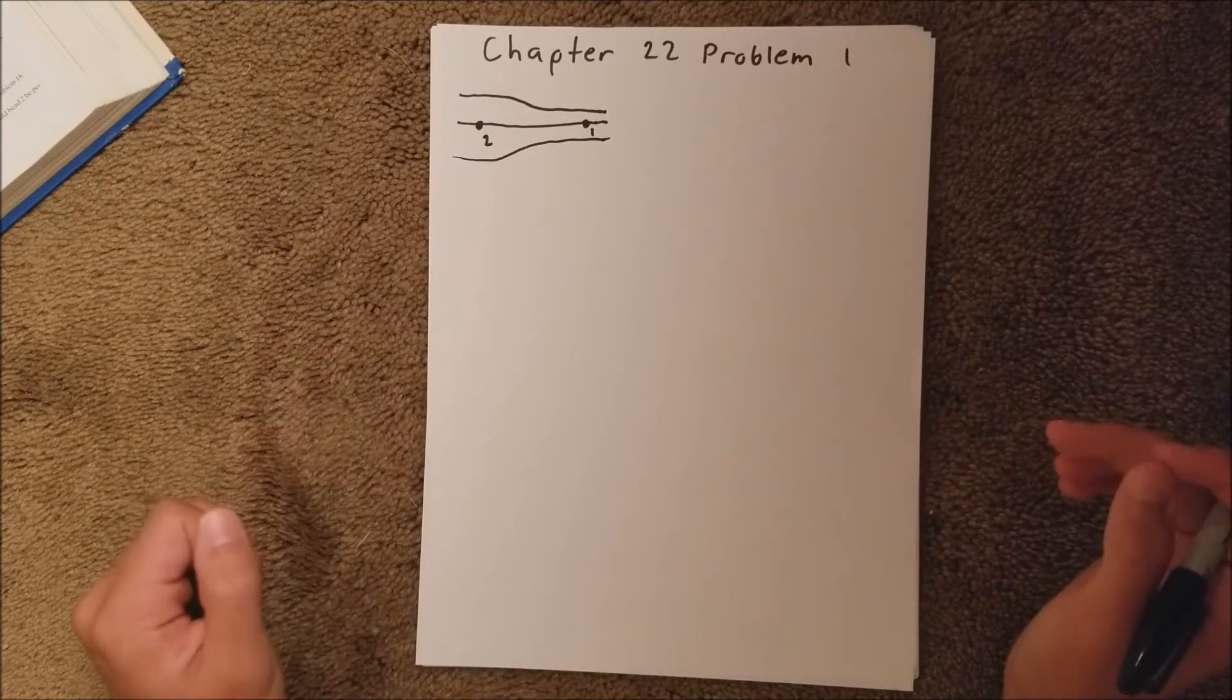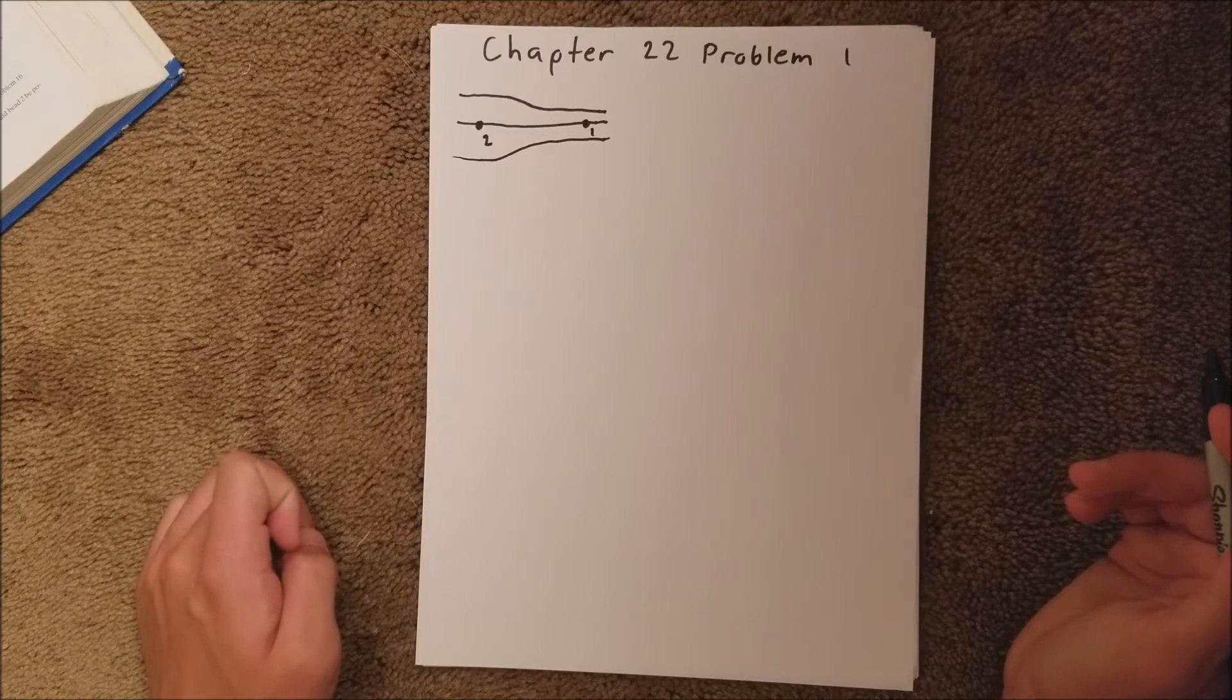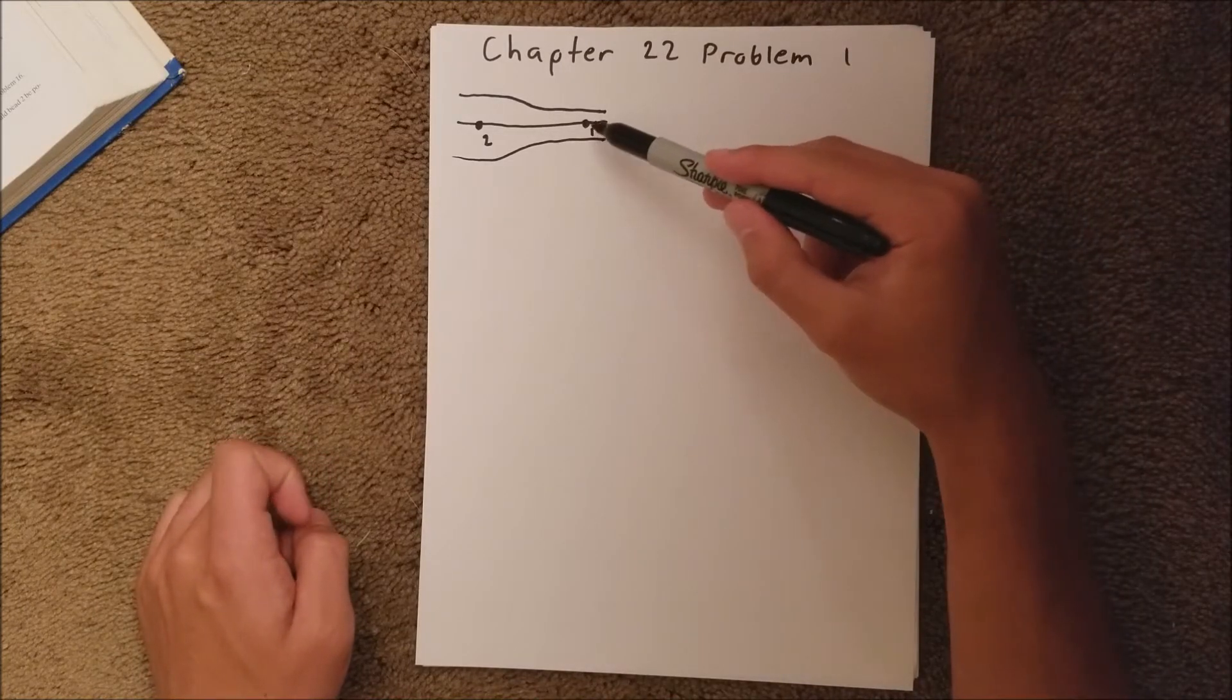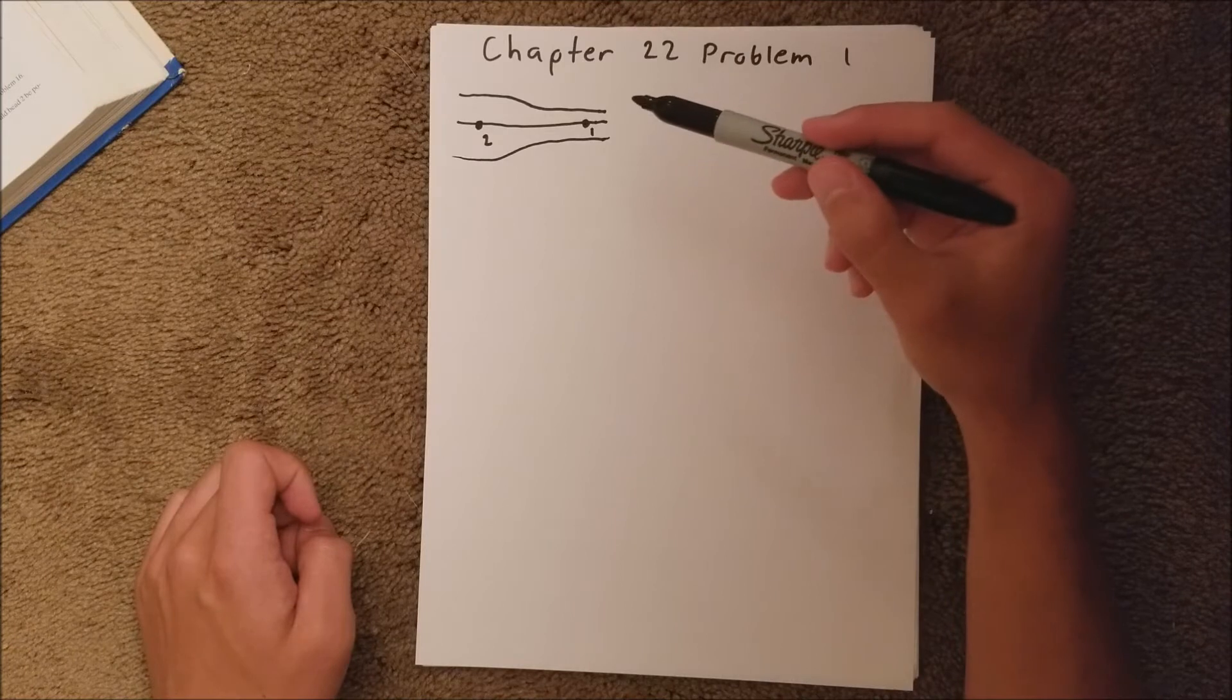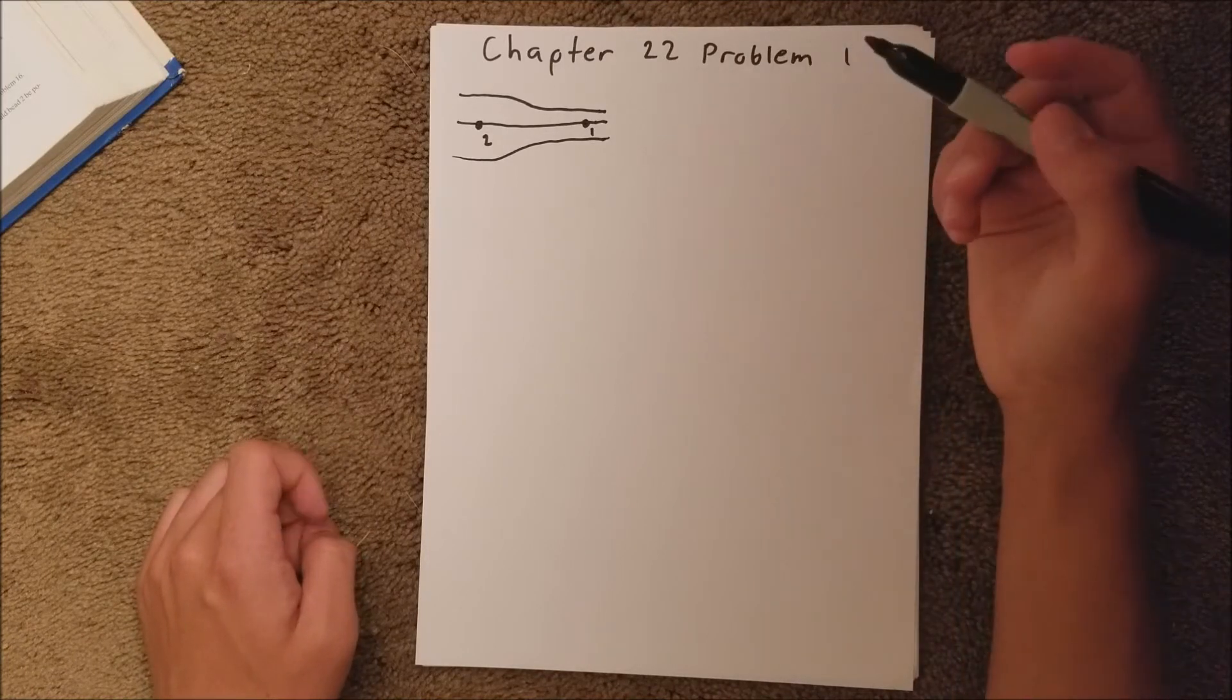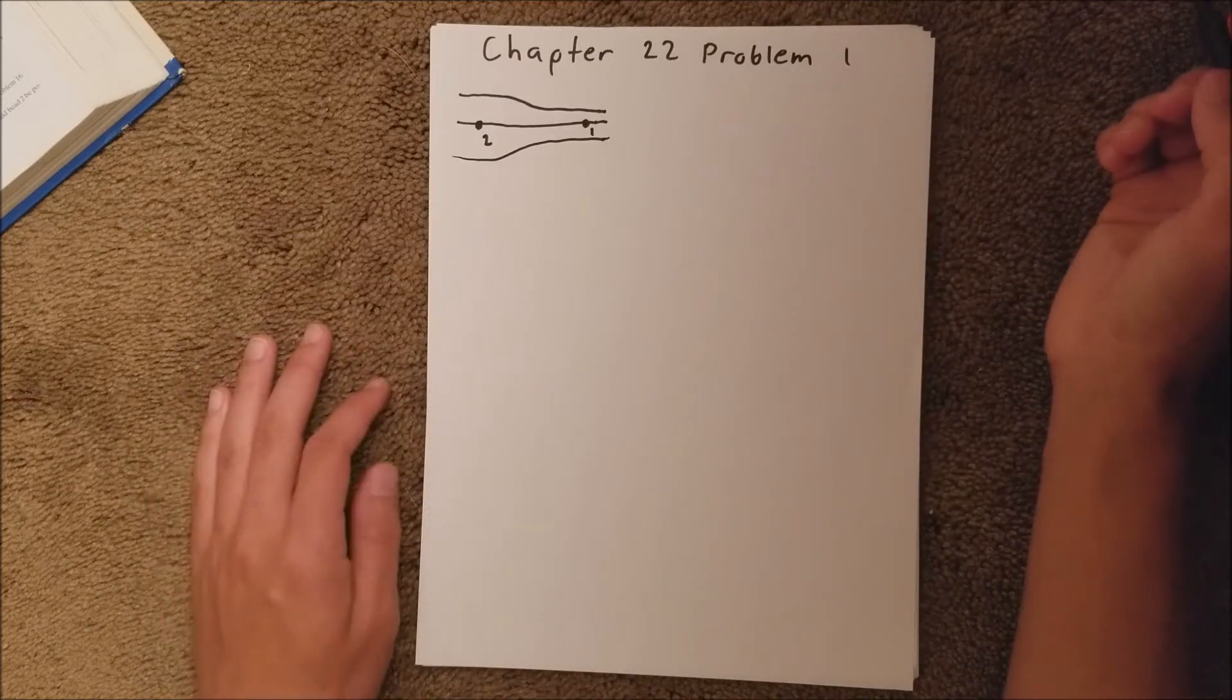In Part A, we are asked for the magnitude of the force on a proton at point 1, if the magnitude of the electric field at that point is 40 newtons per coulomb.